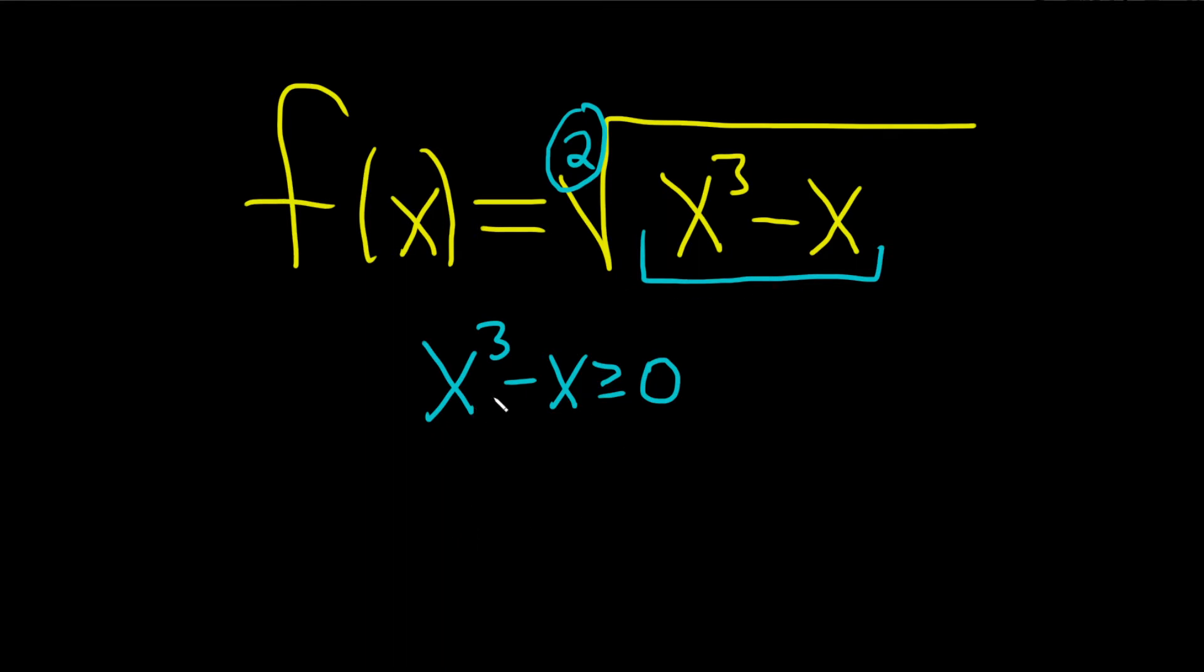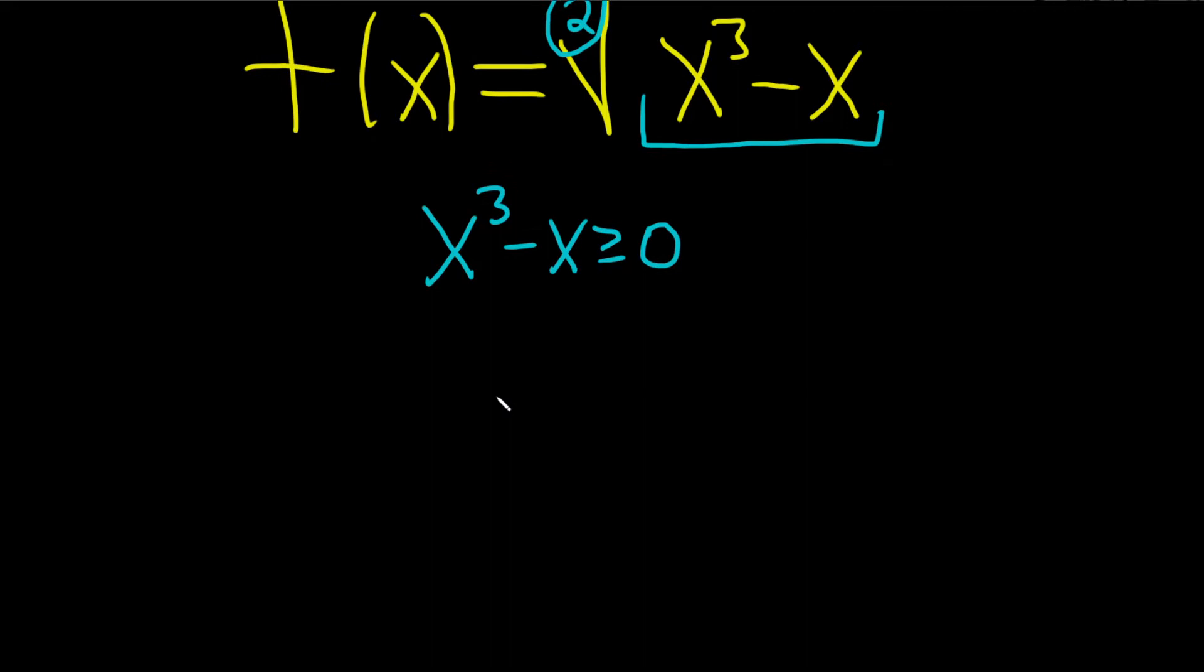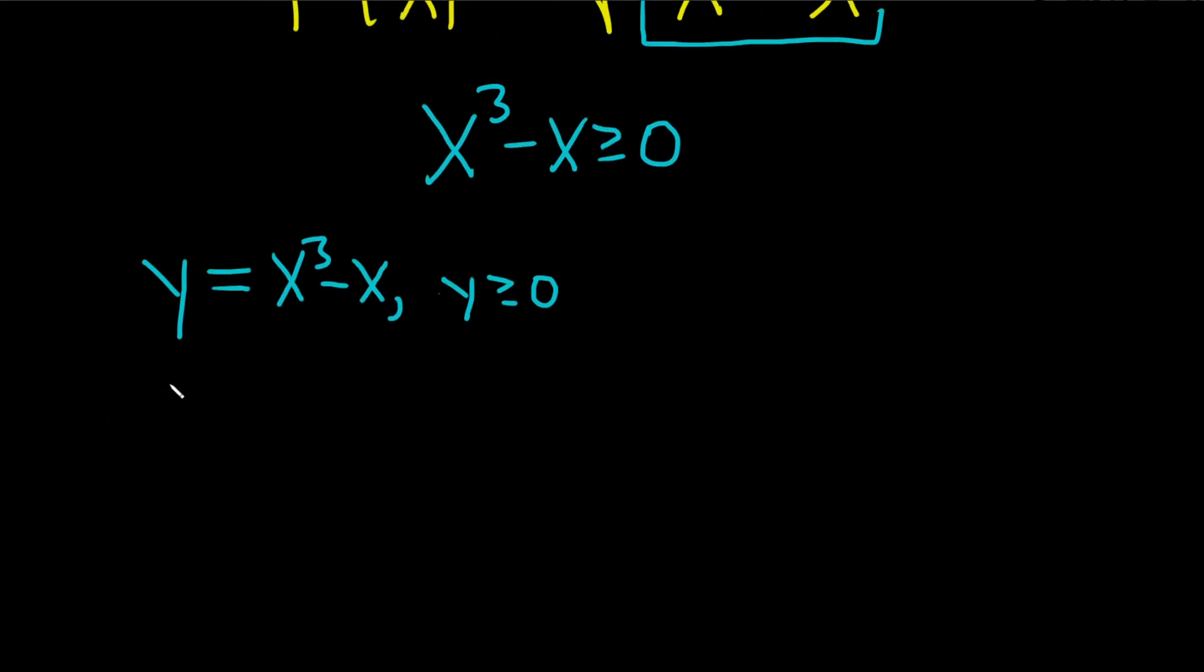And there's a couple of ways to do this. I'd like to do it graphically. So let's call this something. Let's call it y. So y equals x cubed minus x. And the question then is, when is y greater than or equal to zero? So for what values of x is this true? So let's graph this function completely by hand, with no calculator. Here's how.